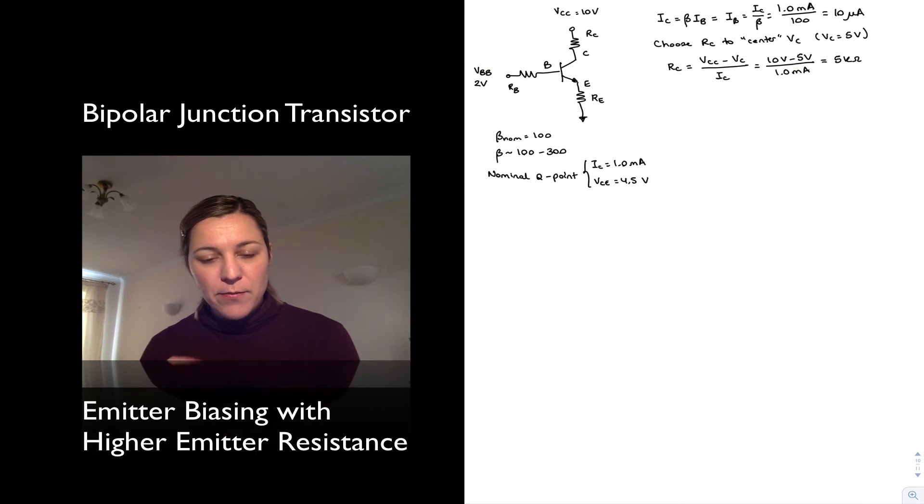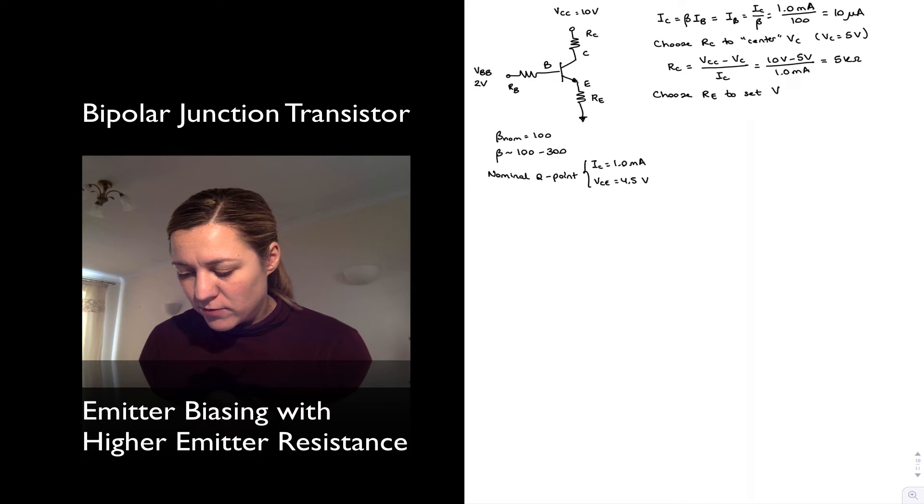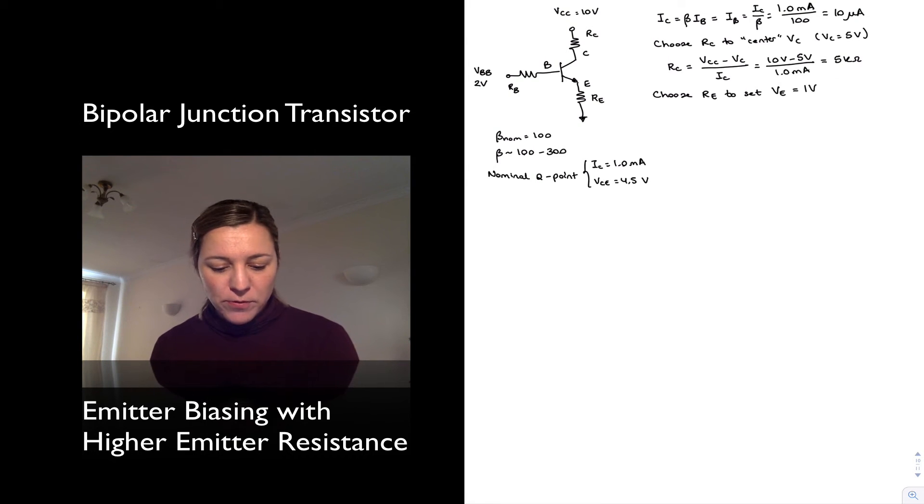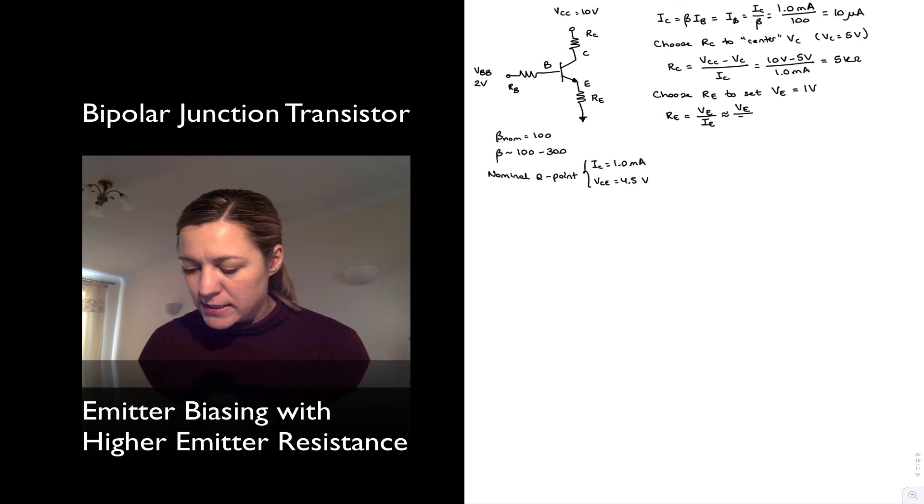But now, instead of wanting the voltage drop across RE to be 0.5 volts, we want it to be 1 volt. So choose RE to set VE equal to 1 volt, double as before. So RE by Ohm's law is going to be equal to VE over IE. We're going to make the approximation that the emitter current is approximately equal to the collector current, so that's approximately VE over IC, or 1 volt over 1 milliamp. So 1 kilo ohm, twice as much as before, which will make sense.